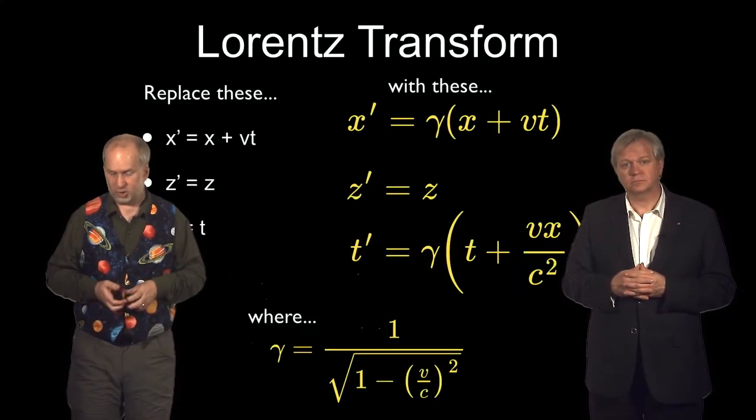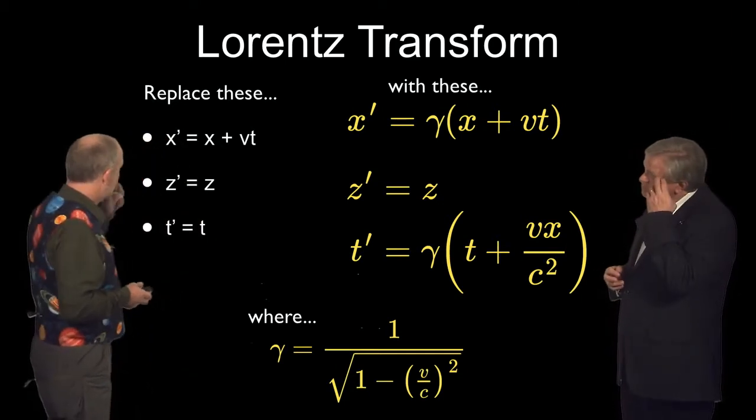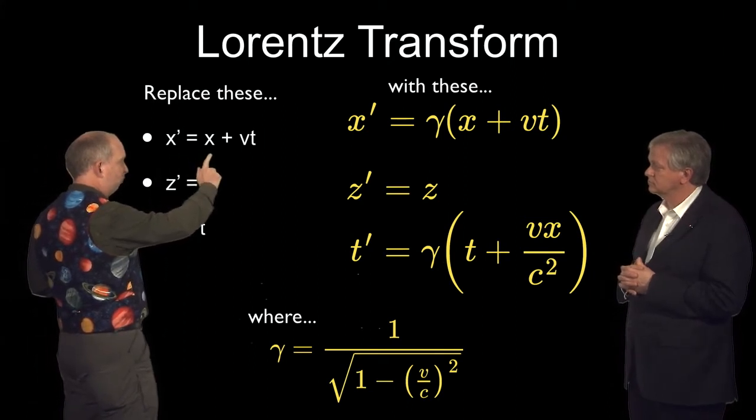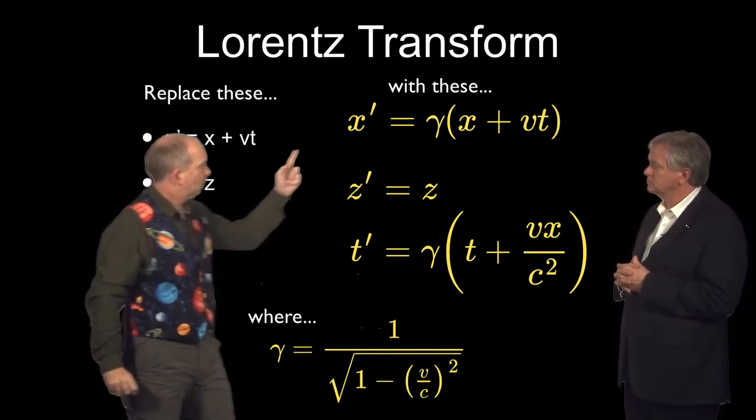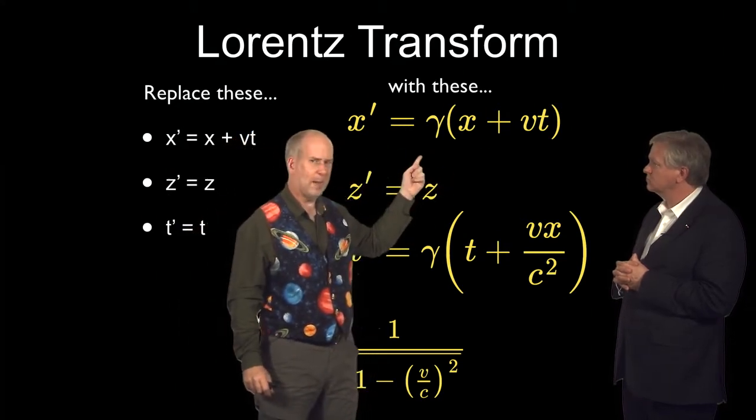So it turns out that if you want the speed of light to be constant for everybody at every time, there's only one set of transforms that can do it. And this is worked out by Lorentz just before Einstein got there independently a year later. And these are them. So here's our common sense transform, which tells us that in my frame reference it's just your frame reference plus velocity times time. But Lorentz said it's the same thing, x prime equals x plus vt, but there's a constant gamma in front.